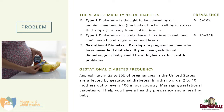Gestational diabetes frequency: approximately 2–10% of all pregnancies in the United States are affected by gestational diabetes. In other words, 2–10 mothers out of every 100 in the country will develop gestational diabetes. Managing gestational diabetes will help you have a healthy pregnancy and a healthy baby.